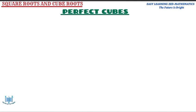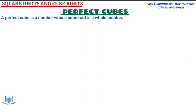A perfect cube is a number whose cube root is a whole number. To be considered a perfect cube, it should have a cube root which is a whole number.